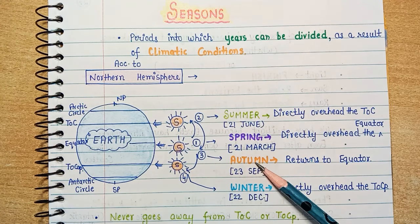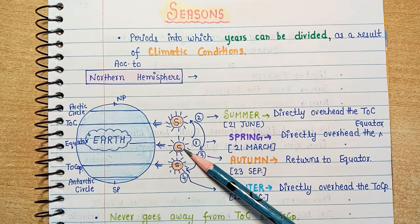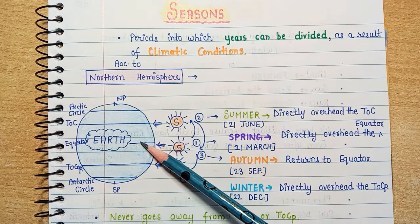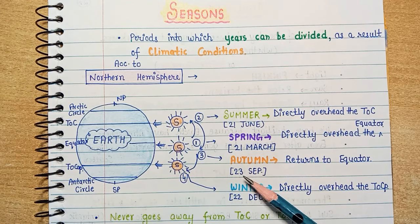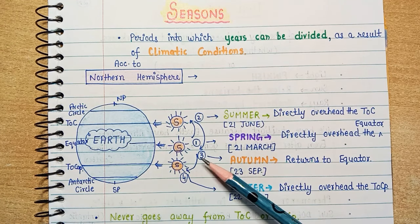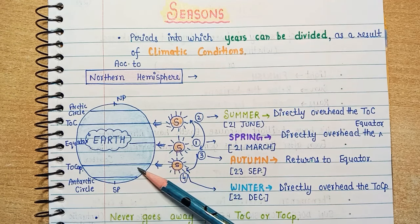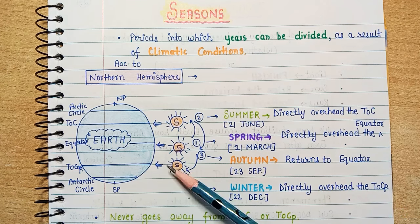Now for number three — autumn. Autumn returns to the equator. At this time the sun comes back to the equator and direct rays start falling on the equator again. This time period starts around 23rd September. After that, number four — the sun has come over the Tropic of Capricorn: winter, directly overhead the Tropic of Capricorn.